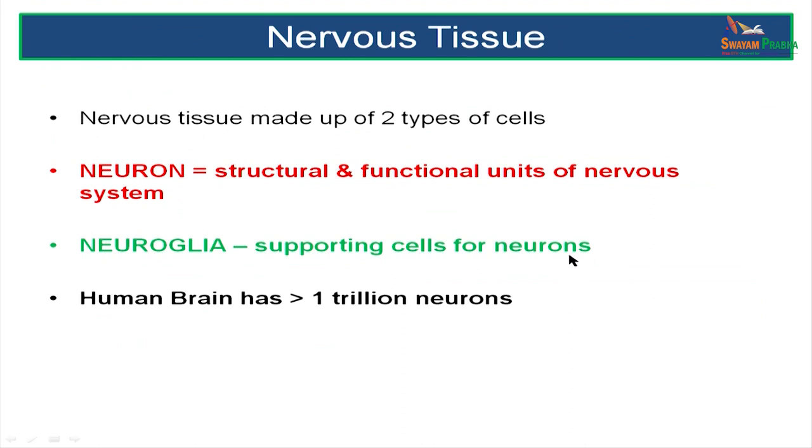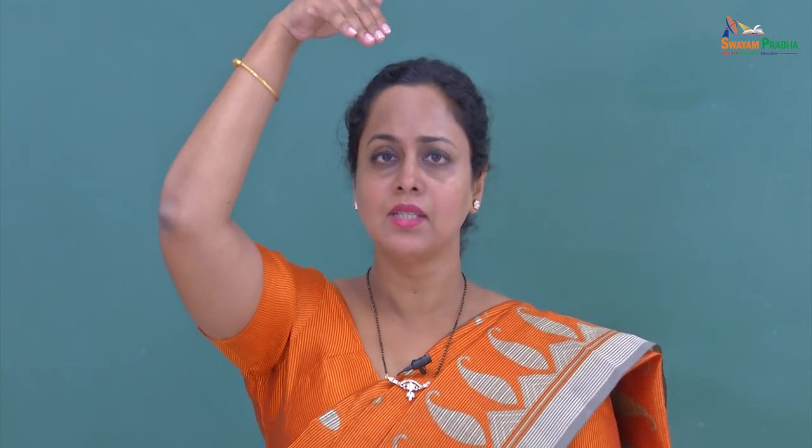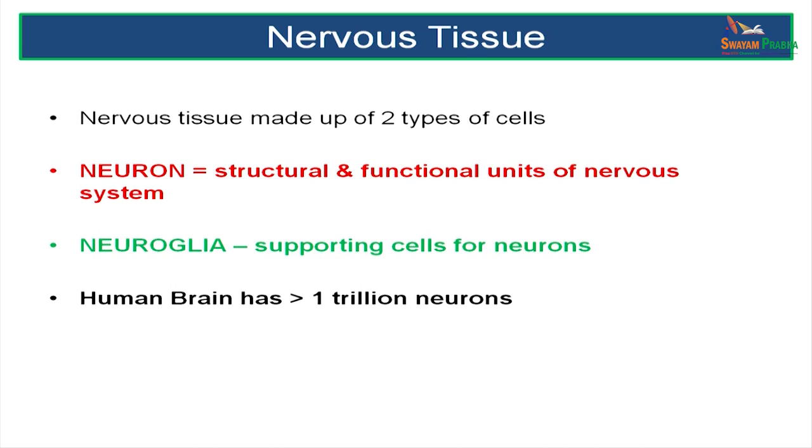Nervous tissue is made up of two types of cells: there is the neuron and the neuroglia. Think of the neuron sitting on a chair — the neuron is being supported by the neuroglia, the neuroglia being the chair, insulating the neuron, supporting it, protecting it and helping in conduction. The neuron is the structural and functional unit of the nervous system whereas the neuroglia provides support.